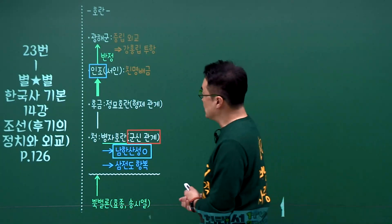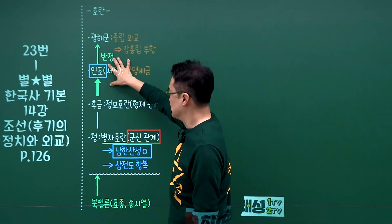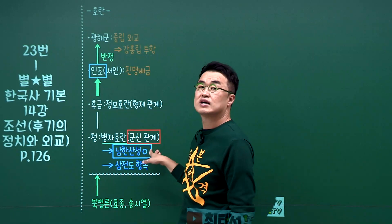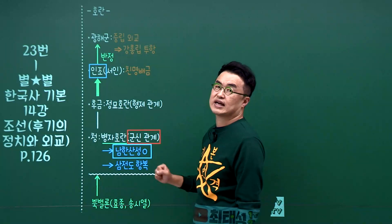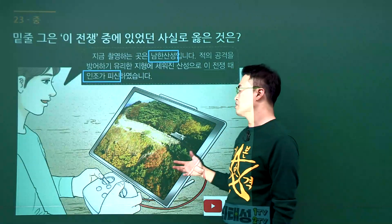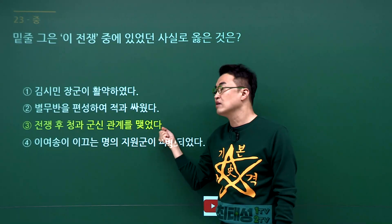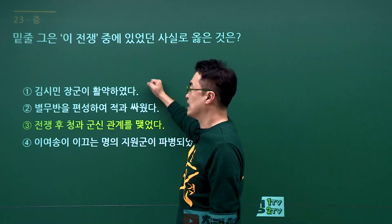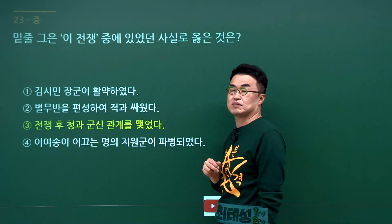병자호란 문제입니다. 병자호란 때 임금은 인조였고, 남한산성에 들어가서 항전했지만 결국 삼전도에서 항복하며 군신관계를 맺게 됩니다. 문제에서 인조가 등장했으니 병자호란이고, 청과 군신관계를 맺었다는 것이 정답입니다. 3번입니다. 김시민과 이여송은 임진왜란, 별무반은 고려시대입니다. 정답은 3번 병자호란입니다.